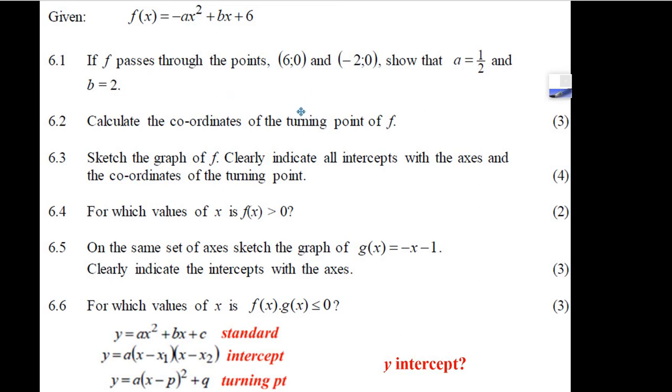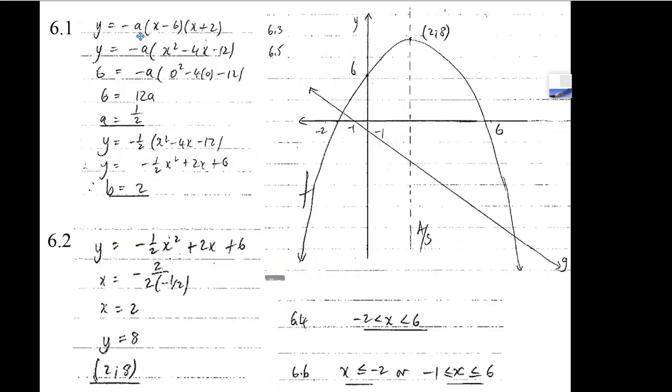We can't just substitute in points and show that it works. You have to actually show algebraically that it's true. Because you're given x-intercepts, we're going to take that x-intercept of 6 and put it in for x1, and put the x-intercept of minus 2 and put it in here. That's going to give us a formula.